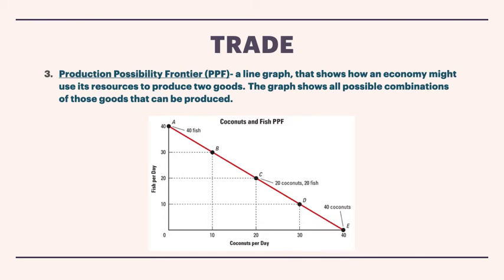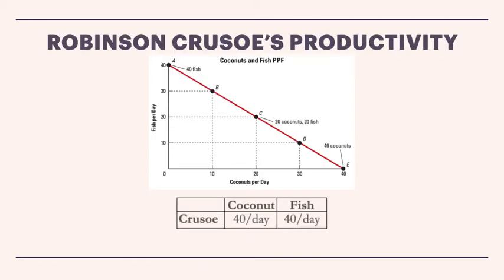Here is a simple PPF for Robinson Crusoe. Over the course of a day, he could catch up to 40 fish, or he could use his time gathering up to 40 coconuts, or he could have some combination of the two. Maybe he wants to gather 30 coconuts — then he can only have enough time to catch 10 fish. Or if he wants 20 coconuts, he'll have enough time to catch 20 fish. That red line shows what Robinson Crusoe is able to produce of either coconuts or fish — his productivity is 40 coconuts per day or 40 fish per day, or some combination on the line.